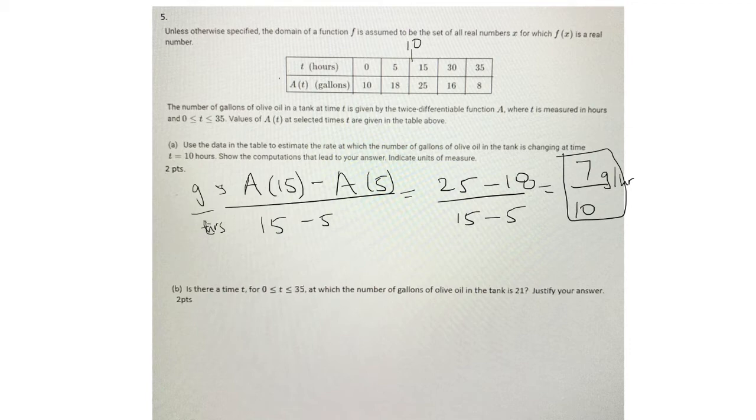Okay, so here we're given that the number of gallons of olive oil is given by the twice differentiable function of A. So if A is differentiable, that means it's continuous. So we can use the intermediate value theorem.